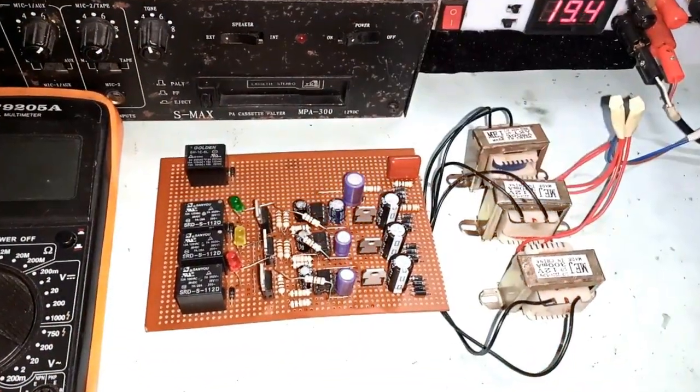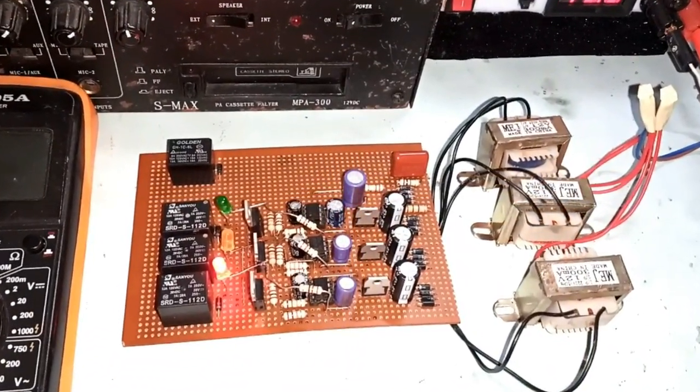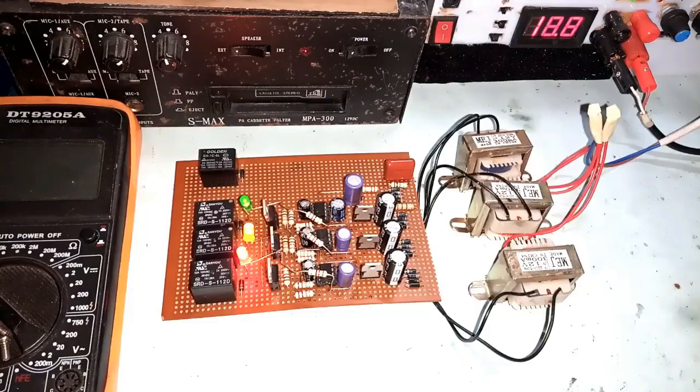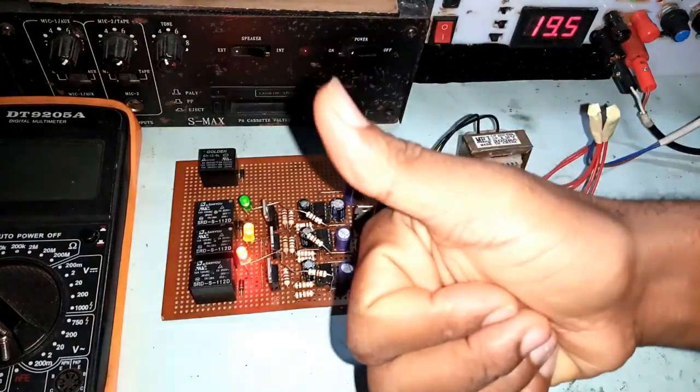In our last development, we used passive electronics components and 555 timer IC for our 3-phase automatic changeover system which was working just fine as expected.